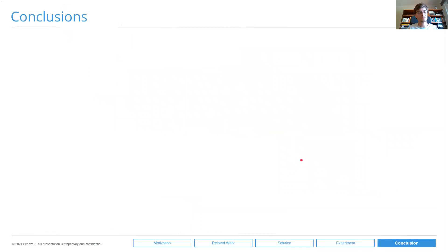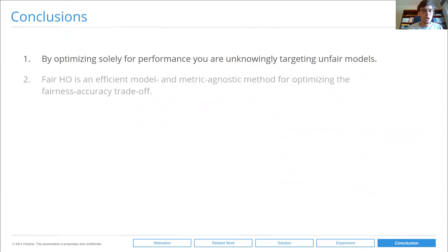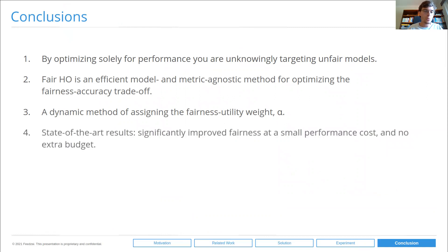So to conclude, by optimizing solely for performance, you are unknowingly targeting unfair models. Fairness-aware hyperparameter optimization is an efficient model and metric agnostic method for optimizing the fairness-accuracy trade-off. We also propose a dynamic method of assigning fairness utility weight, a heuristic for assigning this weight. We show state-of-the-art results, significantly improved fairness at a small performance cost, and no extra budget. And importantly, we show that hyperparameter optimization is an effective and efficient way to navigate the fairness utility trade-off.